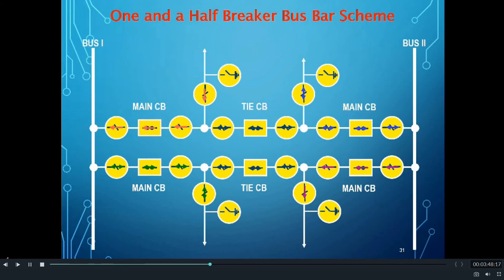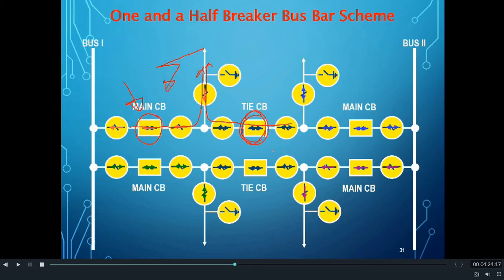Now let us see how LBB operates in the one and a half breaker scheme. Suppose there is a fault in one of the feeders. The fault current will flow from the TIE CB side and the main CB side. So as to clear the fault, the TIE CB and the main CB will trip normally. But if because of some problem the main CB does not operate, then because of the operation of the TIE CB, the fault current which was earlier flowing from the TIE CB side will stop flowing. However, the current which was flowing from the main CB side will continue to flow.